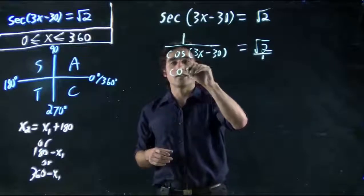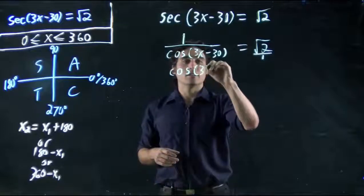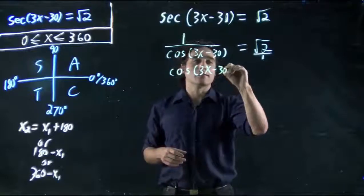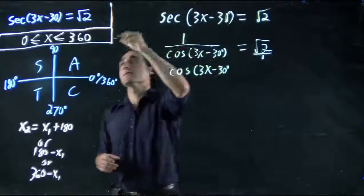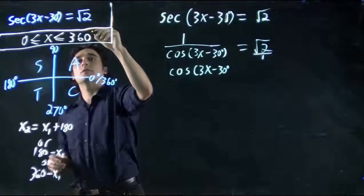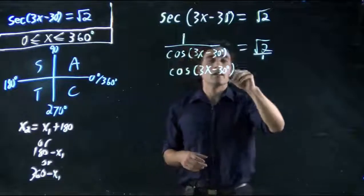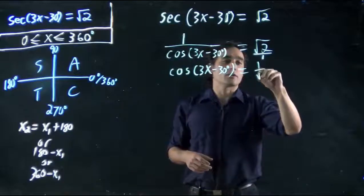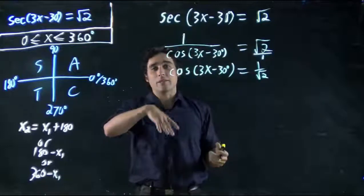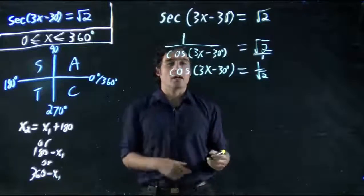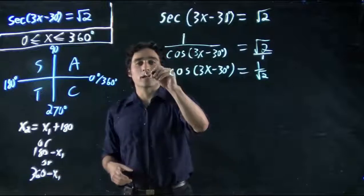So I'm going to get cos of 3x minus 30, and technically I should think this is degrees, by the way, 30 degrees. And that's all equal to 1 over square root 2. Well, now, I've got the same kind of problem I've been looking at before. How do I get rid of cos? I take cos to the minus 1 of both sides.